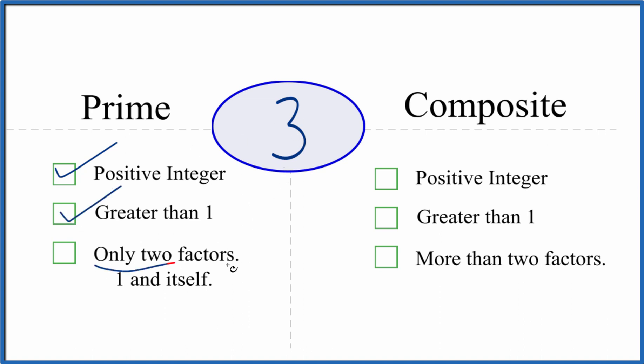And are there only two factors, 1 and 3, that go evenly into 3? So 1 times 3, that equals 3. These are two factors. But are there any more?